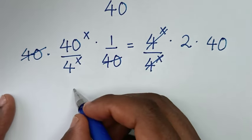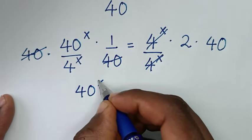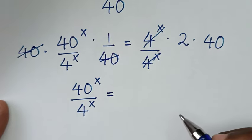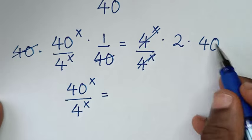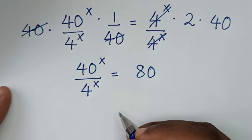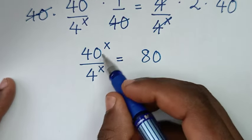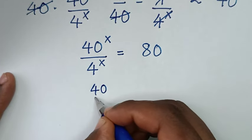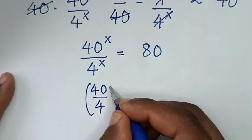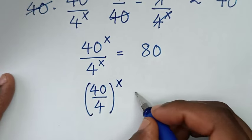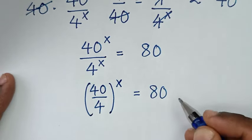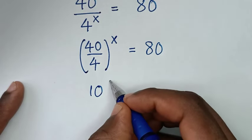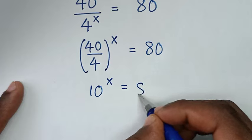So it will be 40 power of x over 4 power of x is equal to 2 times 40, which is 80. Then in the next step, using division of exponents with the same power of x, it becomes 40 over 4 in brackets with the same power of x, equal to 80. Since 40 divided by 4 is 10, it will be 10 power of x is equal to 80.